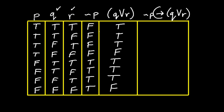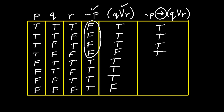This last column contains an if-then statement. If-then statements are true unless the beginning part of the statement is true and the ending is false. We are comparing the not p column with the (q or r) column. Whenever we have a beginning of a statement that is false, we will automatically have a true. Whenever we have true followed by true in an if-then statement, the complete statement is true. However, the last row will be false because we have 'if true then false,' which is a false statement.